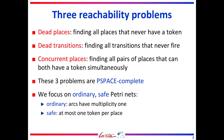In this work, we address free reliability problems of PetriNets. The dead places problem consists in finding all places that are never marked for any reachable marking. The dead transitions problem consists in finding all transitions that are never enabled for any reachable marking. The concurrent places problem consists in finding all pairs of places that have both a token in at least one reachable marking.